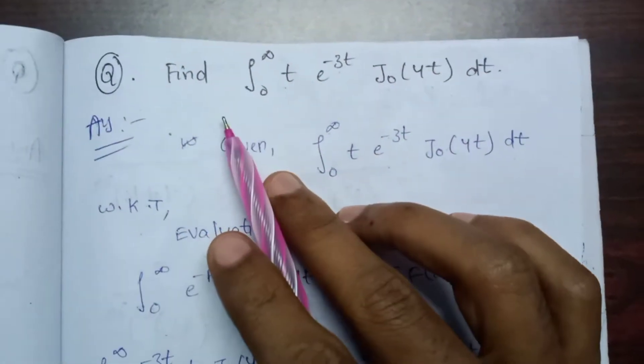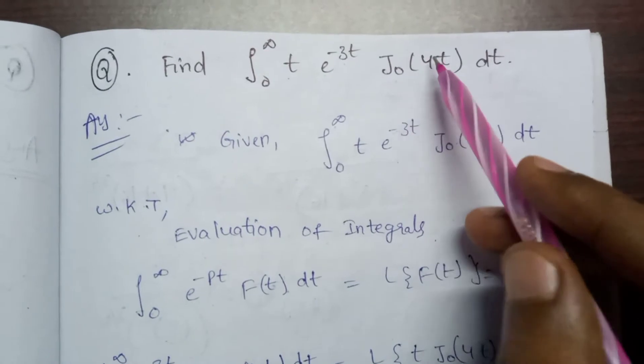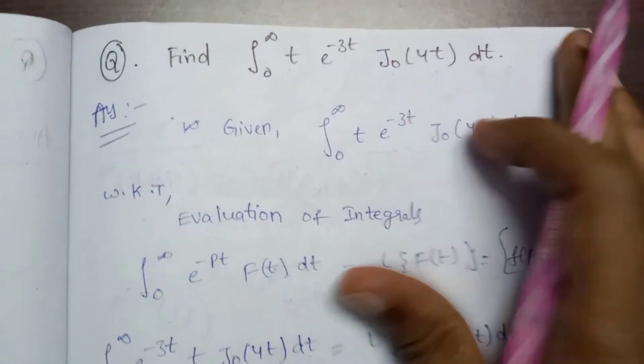Next problem, find the integral from 0 to infinity of e^(-3t) J0(4t) dt. This one is also easy.